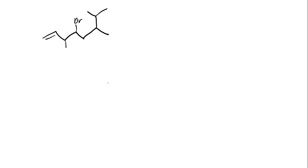Before we get into the actual nomenclature, I wanted to go over some questions on the practice exam that I quickly went over. You might notice that this is an isopropyl group - it's a Y shape. It's iso, and then it has three carbons, so it's a propyl. The answer was actually 4-bromo-3,6,7-trimethyl-1-octene. Why is it octene? What happened to our isopropyl? Well, we shouldn't have an isopropyl because...